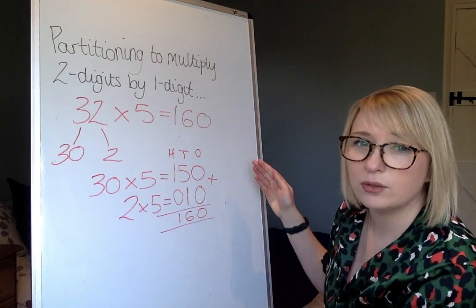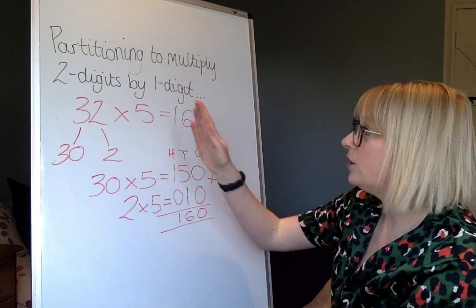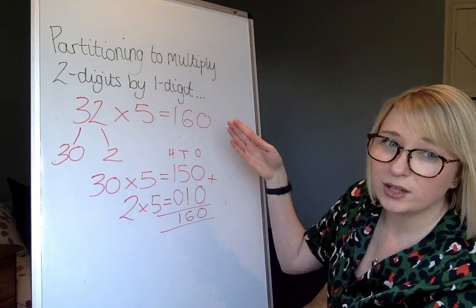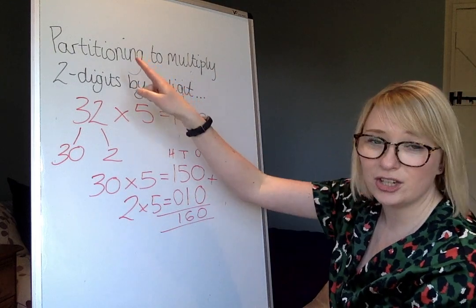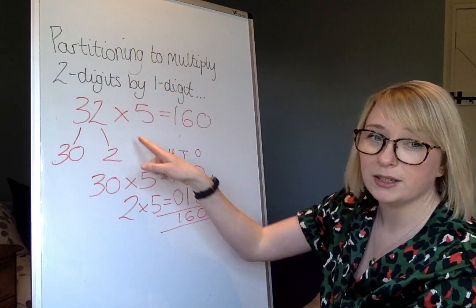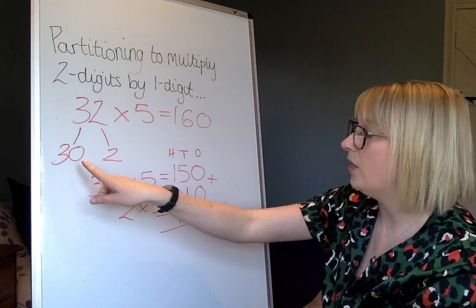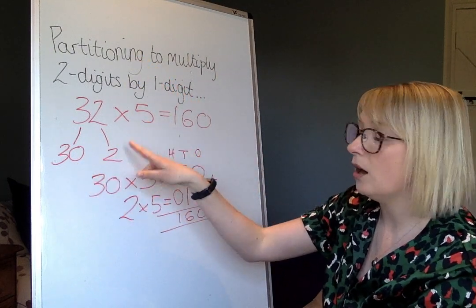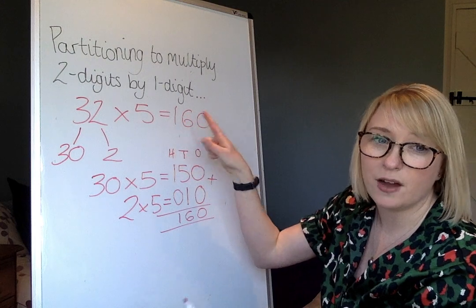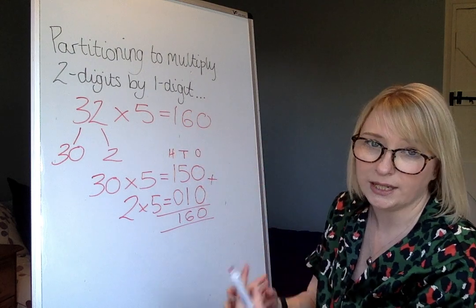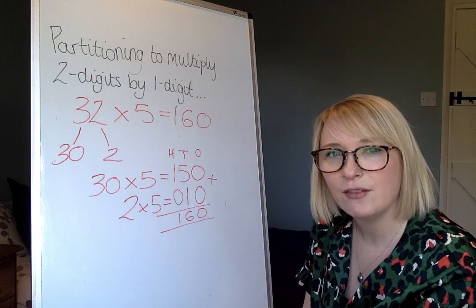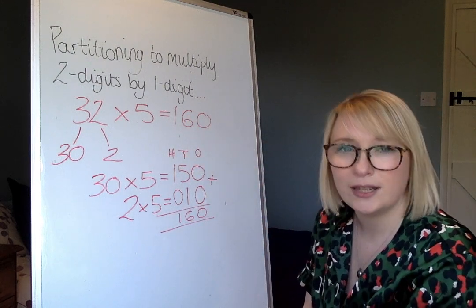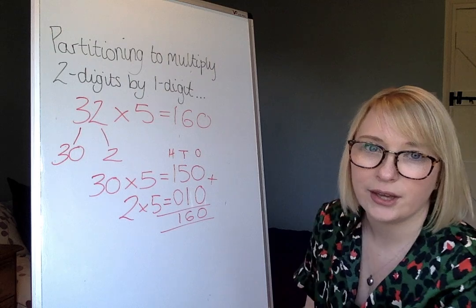And that is how you multiply a two-digit number by a one-digit number using a partitioning method — we partitioned, then we did each part multiplied by 5, and recombined at the end. Have a go, try some out, let me know how you go.